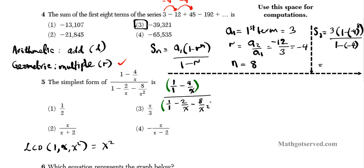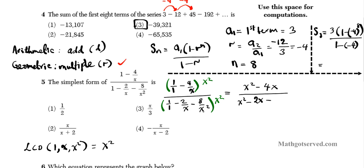If I multiply every single term by the LCD x squared, all the denominators should go away. Whatever you do to the numerator, do exactly the same to the denominator. In the numerator I'll multiply by x squared, and the denominator by x squared also. Distributing through, in the numerator: x squared minus 4x (the x cancels with one x), so x squared minus 4x. In the denominator: x squared minus 2x, because x squared times (2 over x) leaves 2x. Then minus 8, because x squared times (8 over x squared) cancels to 8.